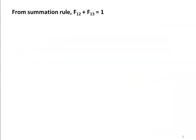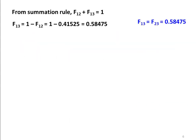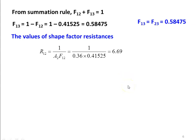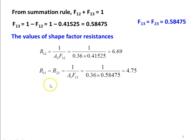From the summation rule: F11 + F12 + F13 = 1, so F13 = 1 − F12 = 1 − 0.41525 = 0.58475. By reciprocity, A1·F13 = A2·F23, and since A1 = A2, F23 = 0.58475. The shape factor resistances are: R12 = 1 / (A1 · F12) = 1 / (0.36 × 0.41525) = 6.69. R13 = R23 = 1 / (A1 · F13) = 1 / (0.36 × 0.58475) = 4.75.